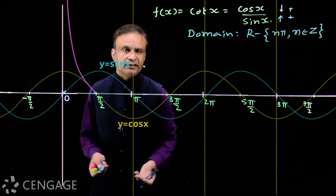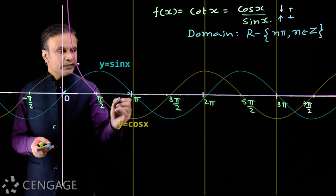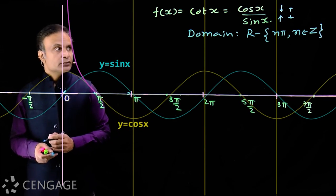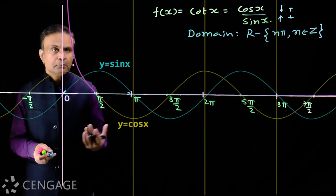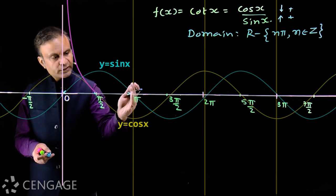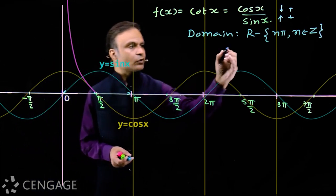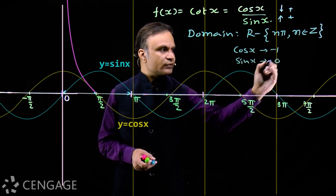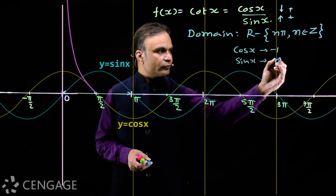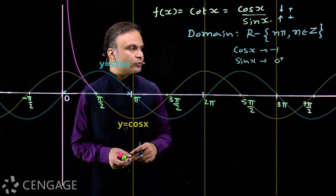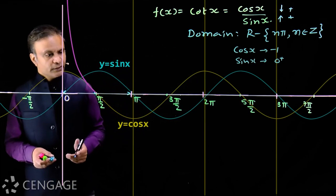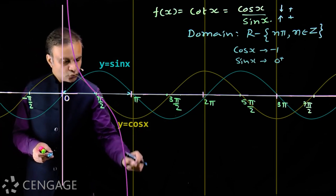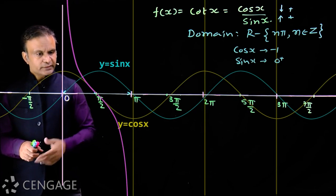In the second quadrant, cot(x) will be negative. As x approaches π, cos(x) approaches −1 and sin(x) approaches 0 from the positive side (0⁺), so cos(x)/sin(x) approaches −∞. Therefore, in the second quadrant the graph of cot(x) decreases from 0 to −∞. So in the interval (0, π), the graph continuously decreases.